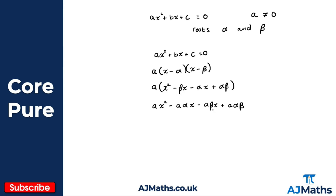From here we can factor out the a and the x, giving us ax squared, minus a times (alpha plus beta) times x, plus a alpha beta. Now I'm going to compare this to the coefficients of the original quadratic ax squared plus bx plus c equals zero.